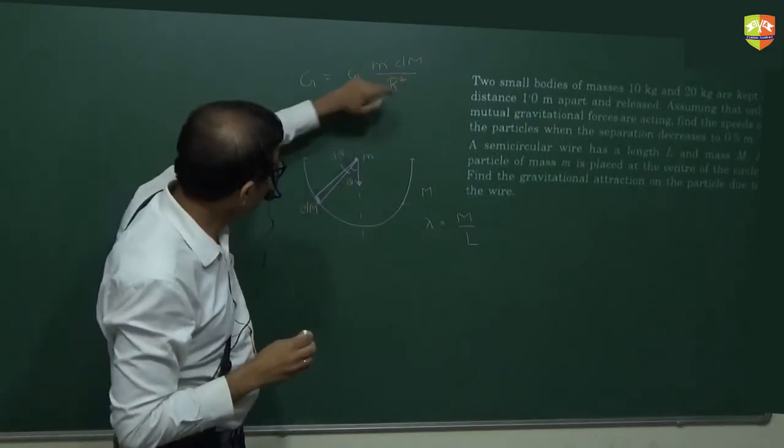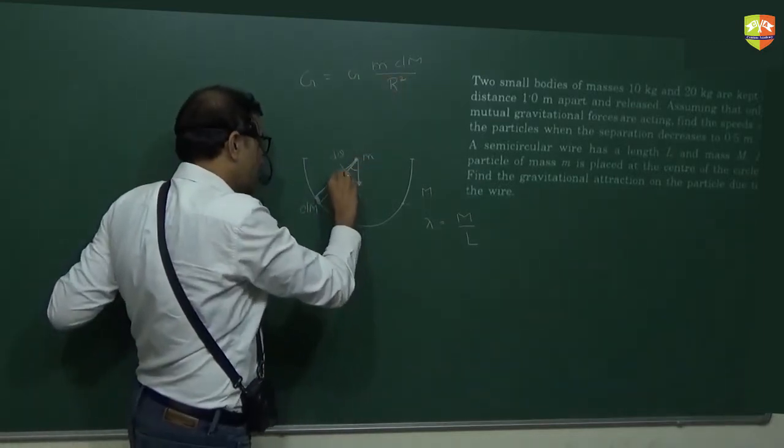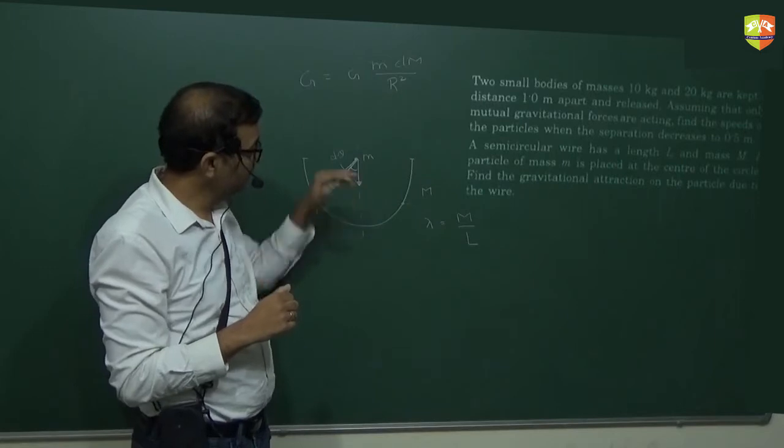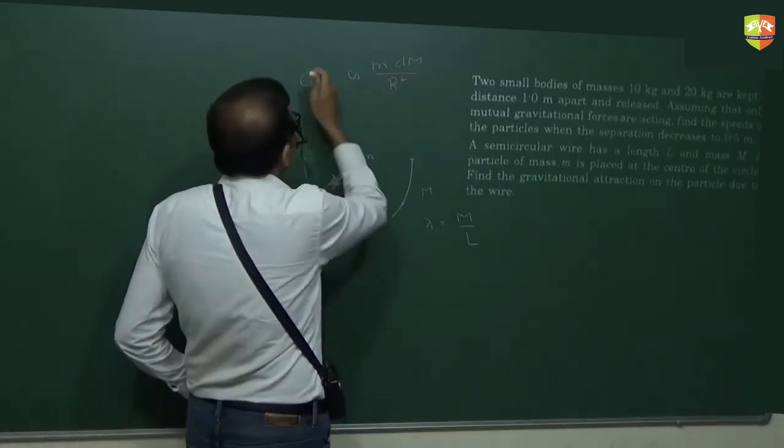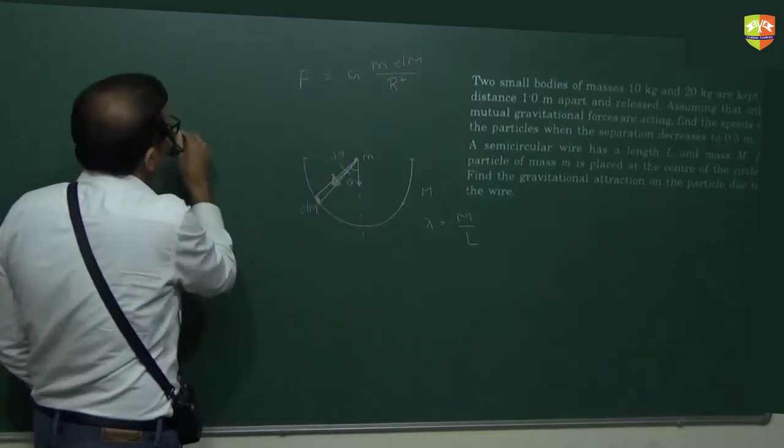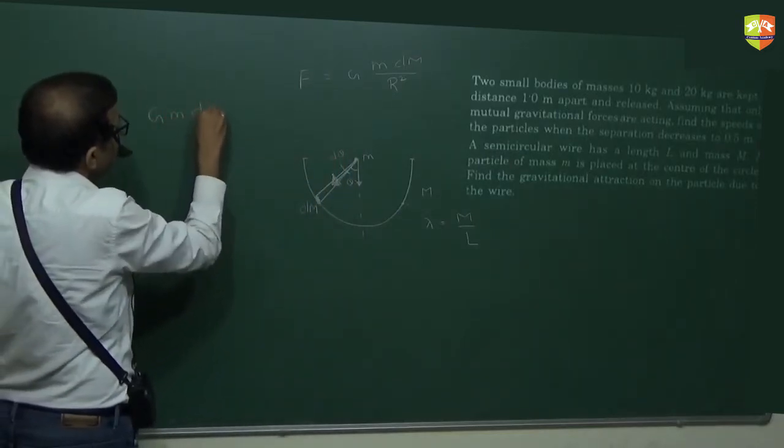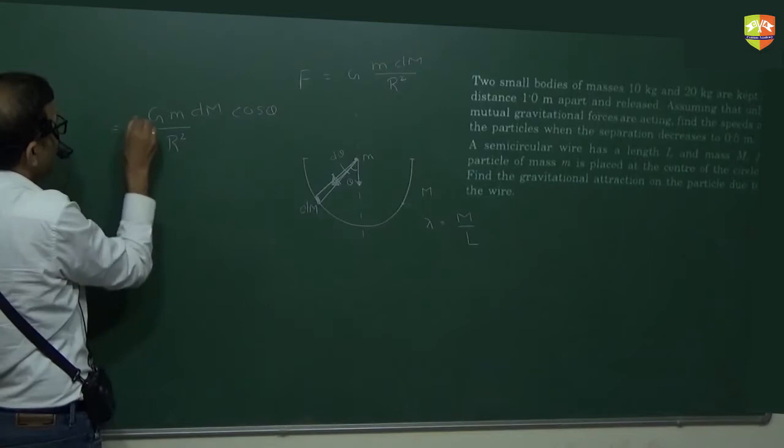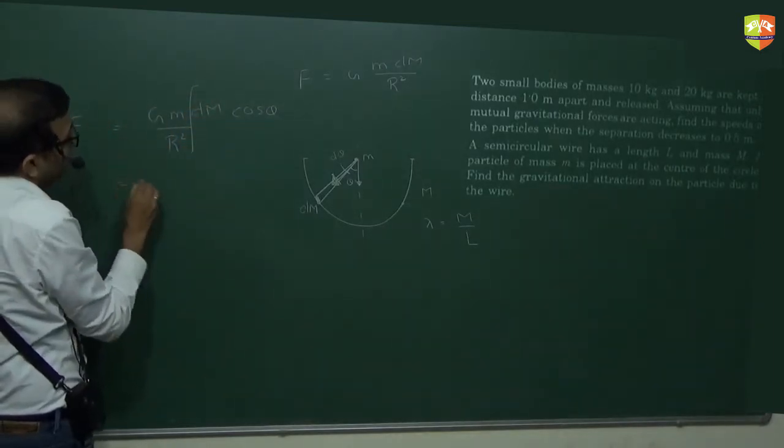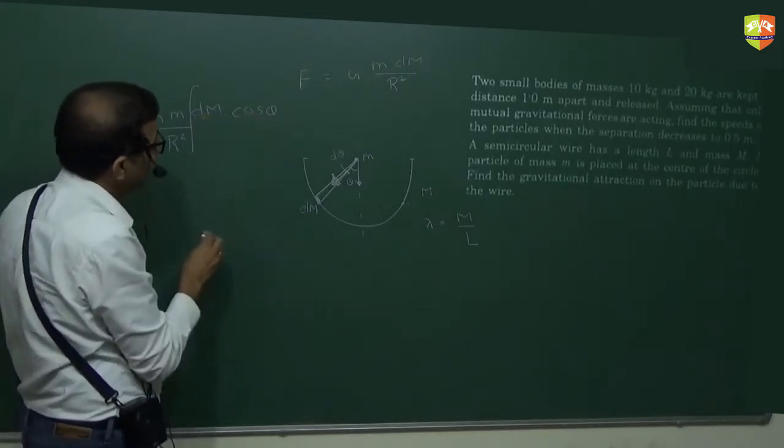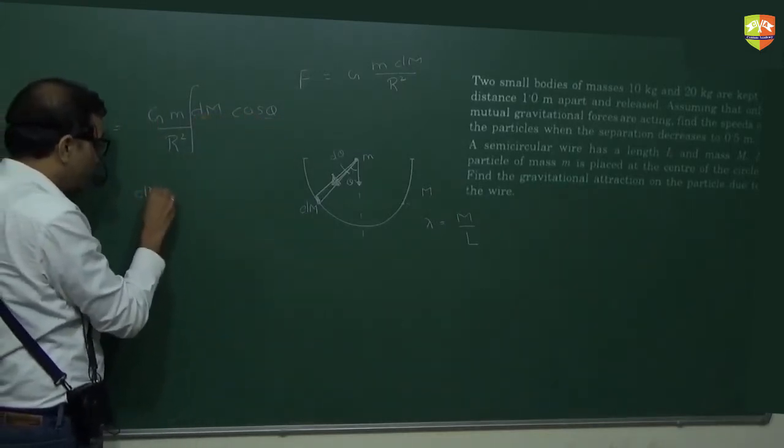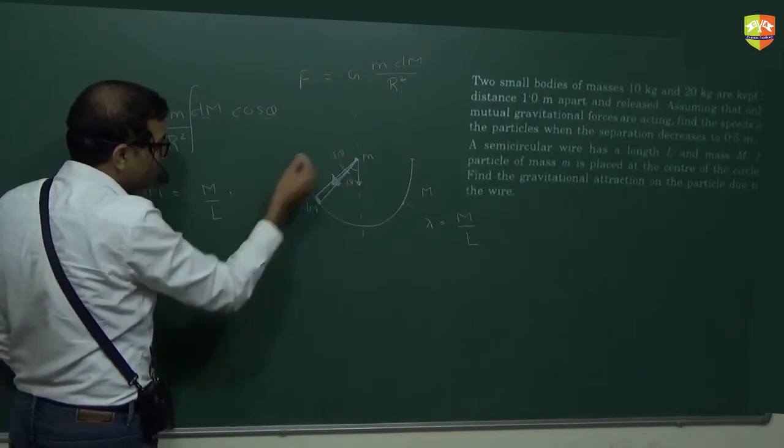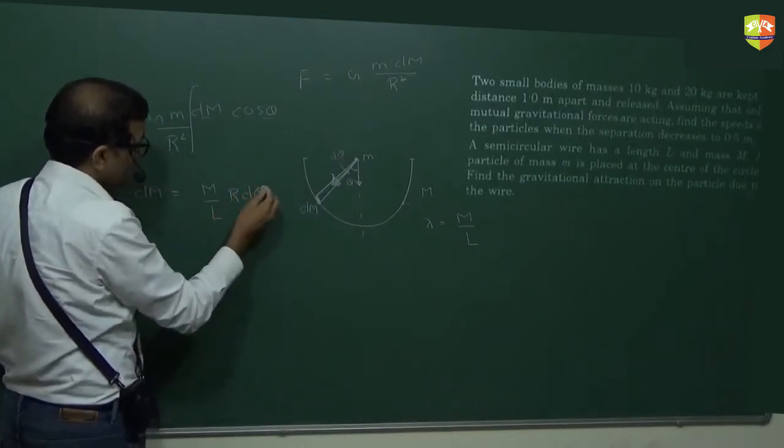Now this is the force in this direction. And which component I should integrate? Cos theta. Cos theta. Theta is like this, downward. So this is the force. So I need to integrate cos theta component of this: g m dm by r square cos theta. So if I integrate, I will get the total force. Now dm and cos theta, two variables are there. So I will write dm in terms of d theta. How much it will be? m by l, r d theta. m by l is mass per unit length into length of that is r d theta.